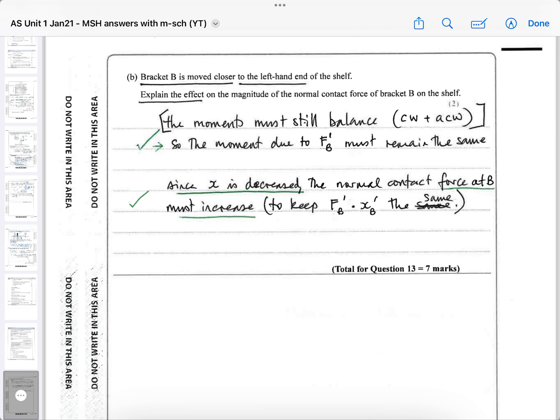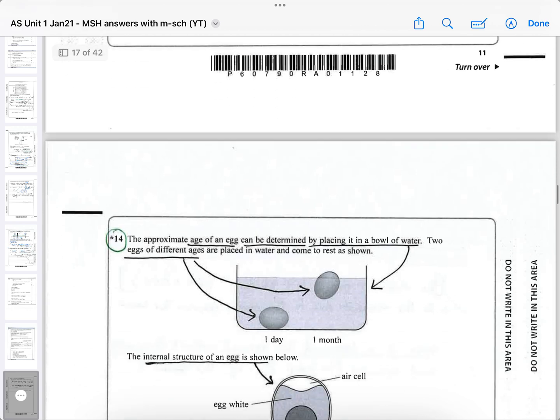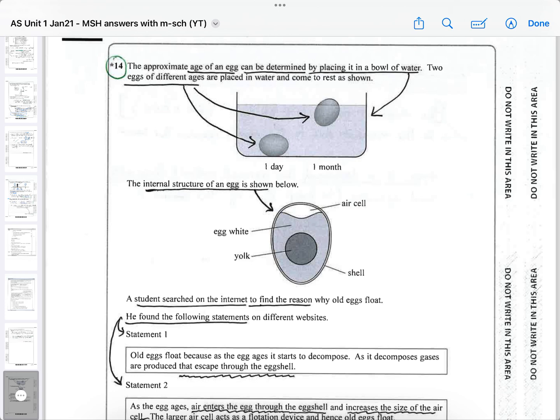Because remember, moments are the force times the distance. So you have to keep the force, the new force times the new distance, the same as it was with the old values. So that's how you explain the two marks and that's the end of the seven mark question for moments. That's a useful revision.